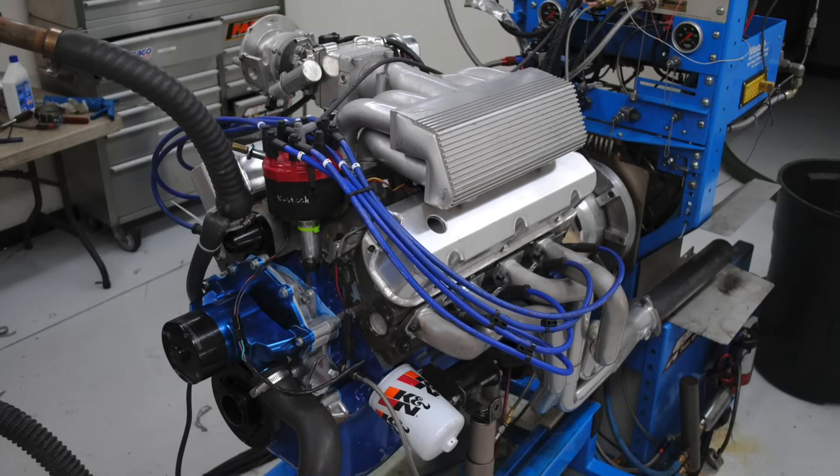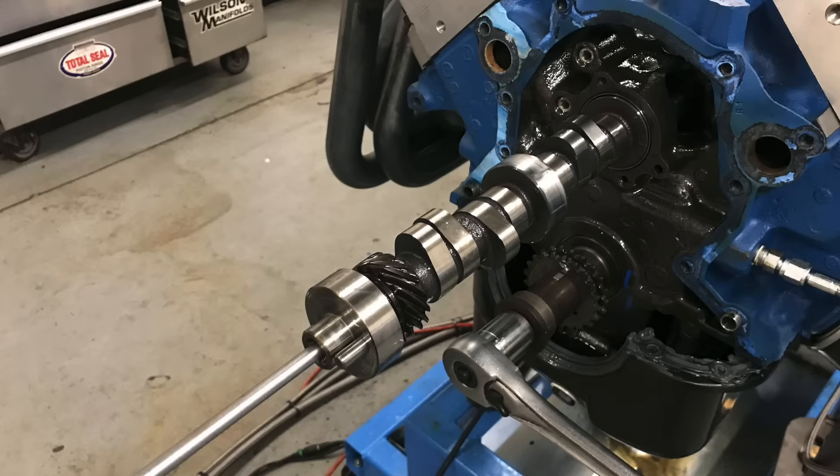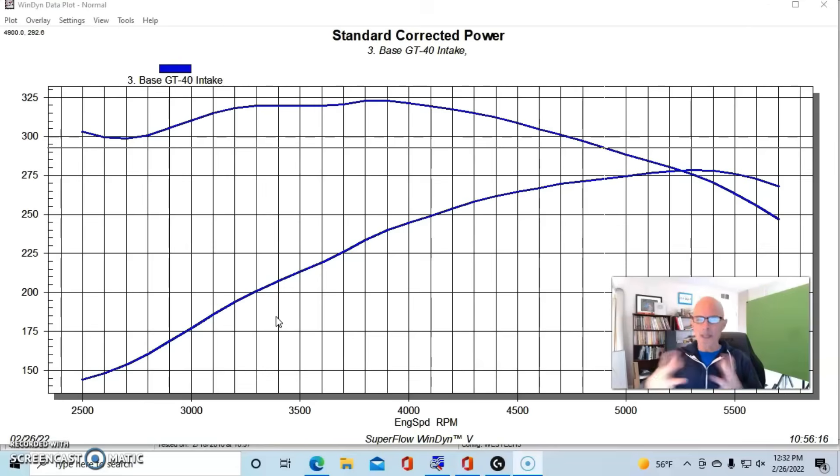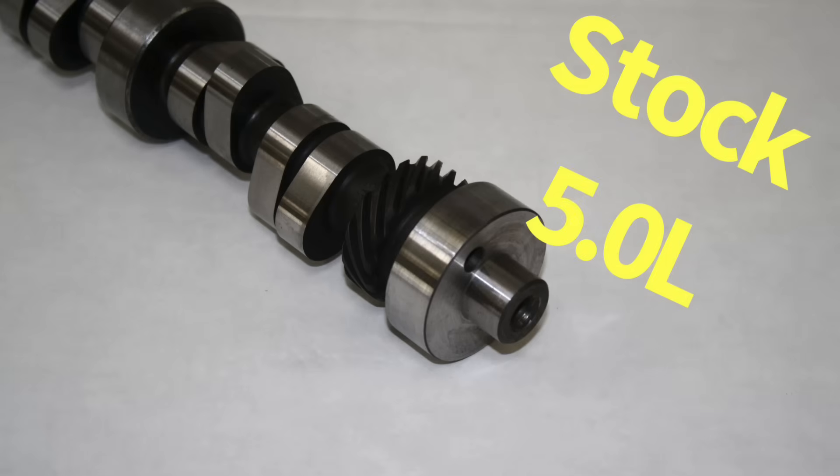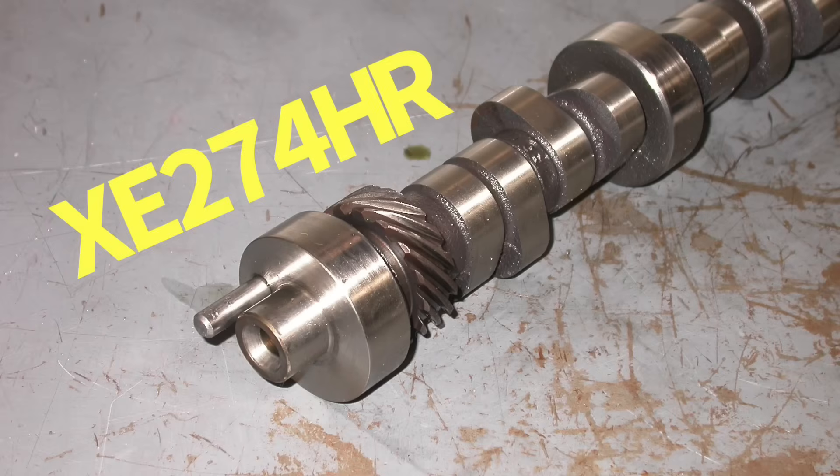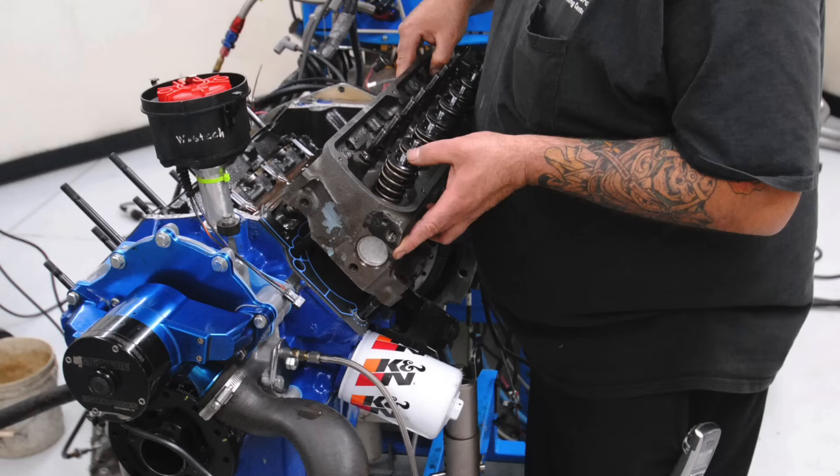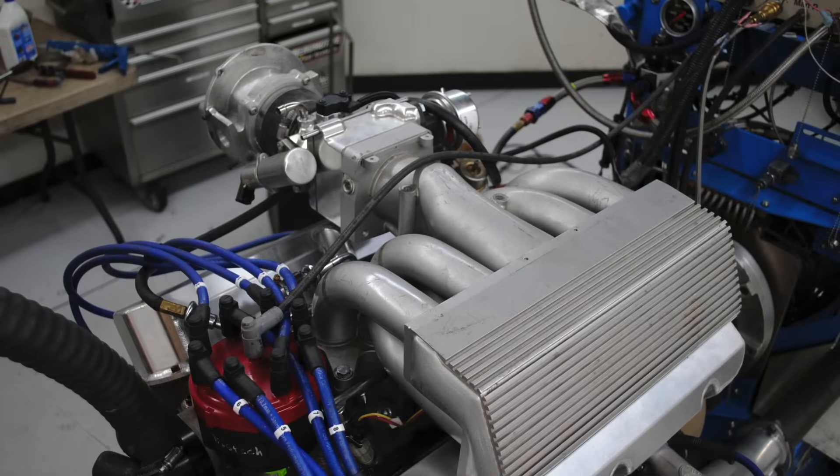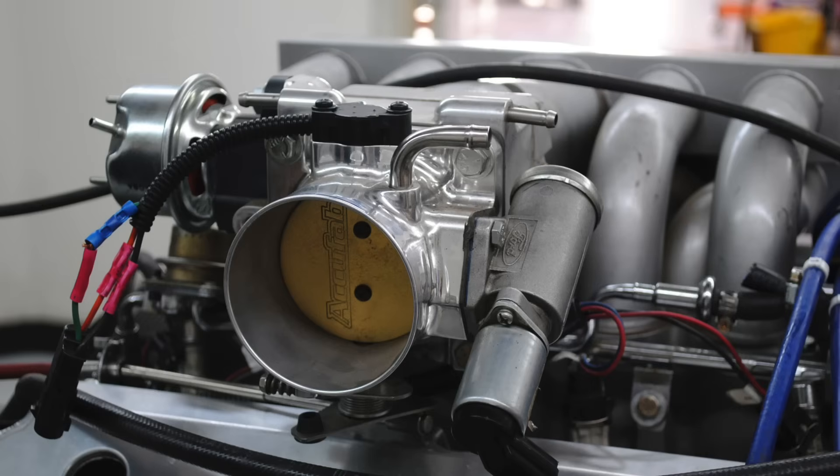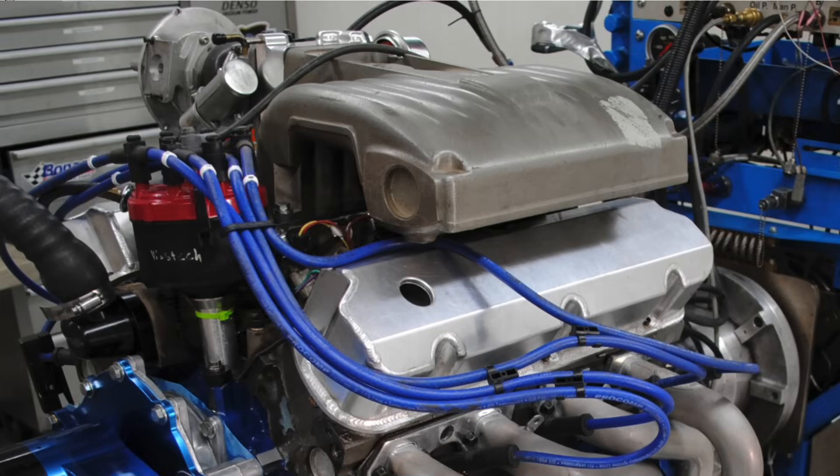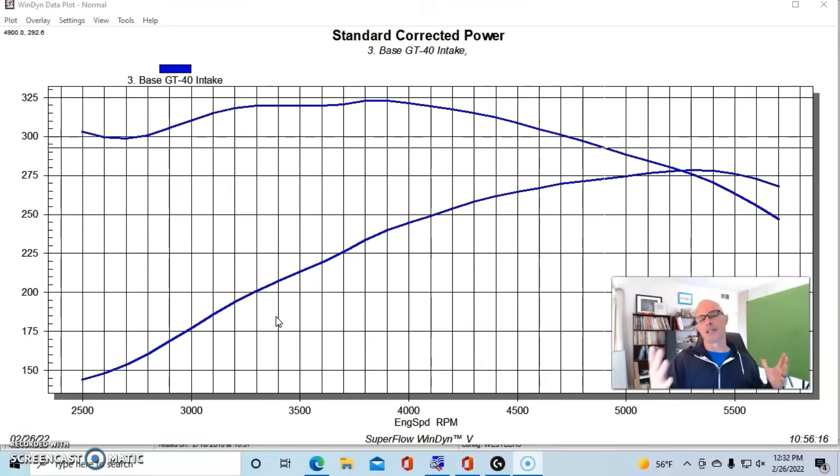To illustrate that the power gains offered by a cam swap on a 5.0L Ford are going to be dependent on the test motor, I'm going to show you what happens when we went from the factory 5.0L Ford cam to the Xtreme Energy 274 cam on two different combinations. If you have a combination that is mild, for instance, one that's equipped with stock heads like this combination and has a mild intake manifold, in this case, it's a GT40, which is certainly better than the factory 5.0L, but not as good as a lot of other intake combinations.